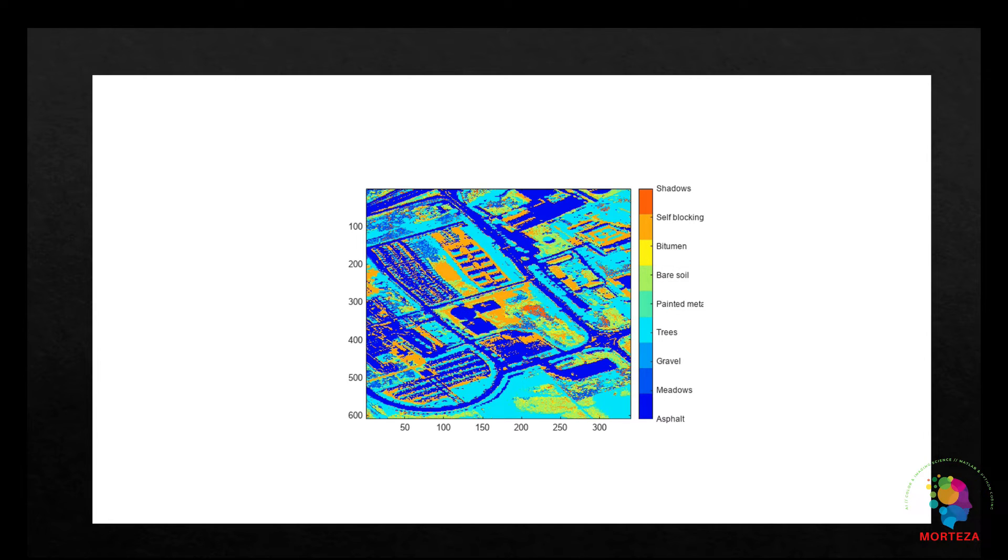So as you can see, the end members have to be found before the classification process starts, because the end members specify the classes into which the hyperspectral image is going to be classified. There are different methods that one could use to specify the end members in a particular hyperspectral image, which is a topic for a separate video and I am not going to cover that now.